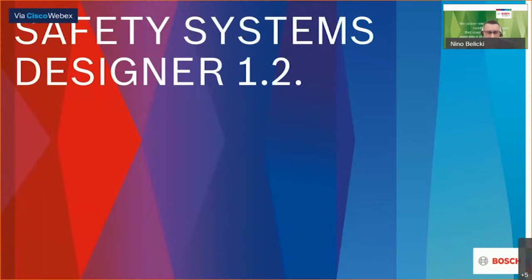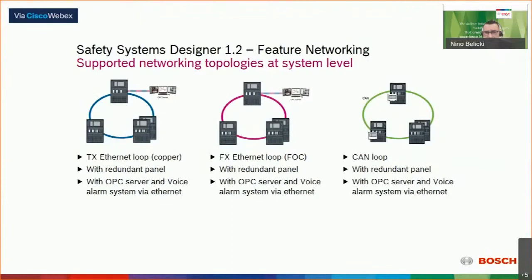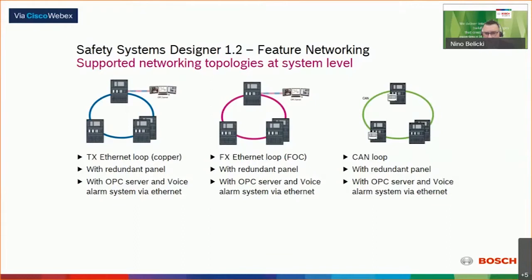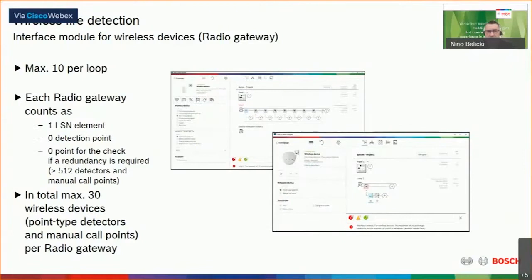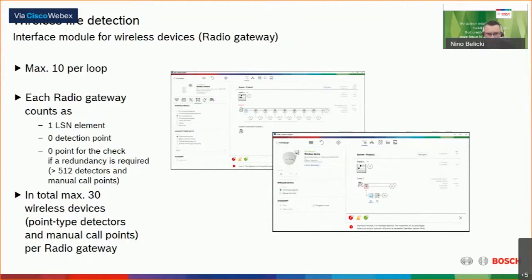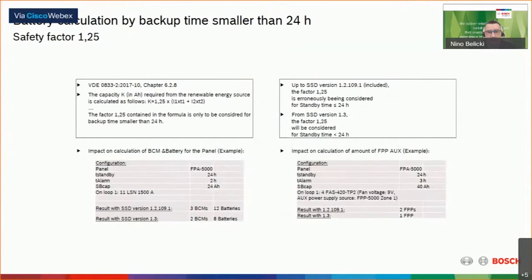I will show you some phases of the software development. First we added the networking part, which was always very complex due to EN54 requirements on Bosch's side. The software automatically adds everything needed to be fully compliant with EN54. After that, we moved to version 1.3, adding a lot of features. One of these was a wireless gateway — we extended our offering last year with a wireless subsystem.